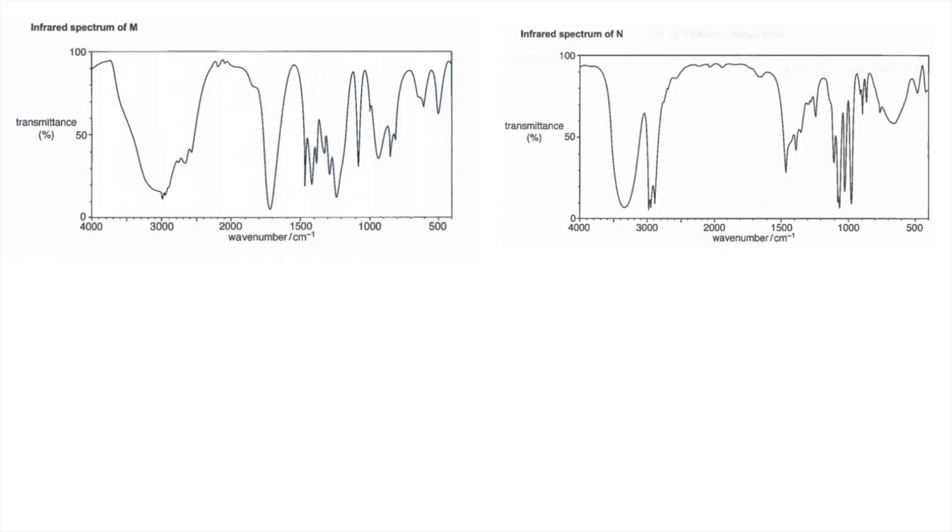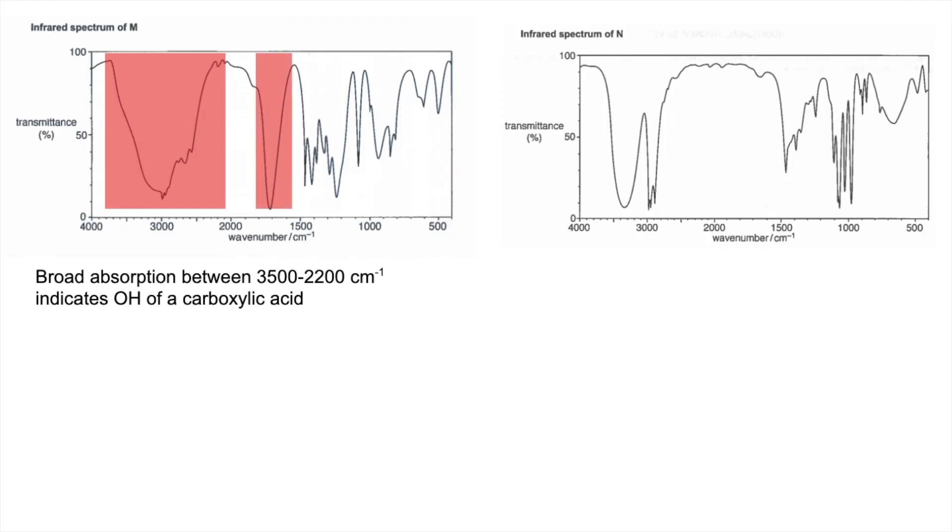So infrared spectra for M, I'm focusing on two key absorptions, this one here. So going straight to the datasheet, we would say that the broad absorption between those values indicates the OH bond of a carboxylic acid. And this absorption here, at around about 1700 cm⁻¹, indicates the presence of a C=O bond. So what that's telling us is that M is a carboxylic acid.